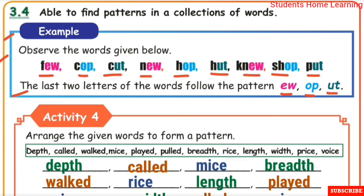The last two letters form one pattern. Look at the first word — the last two letters are E-W. Next is O-P. After that is U-T. Then E-W, O-P, U-T again. This repeating sequence E-W, O-P, U-T is a pattern.